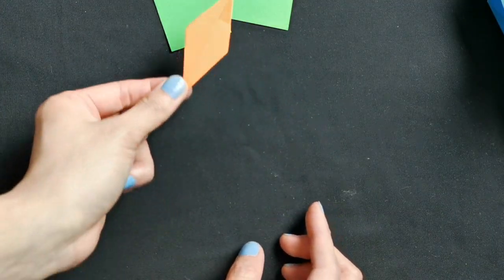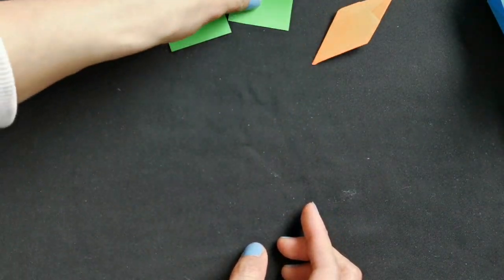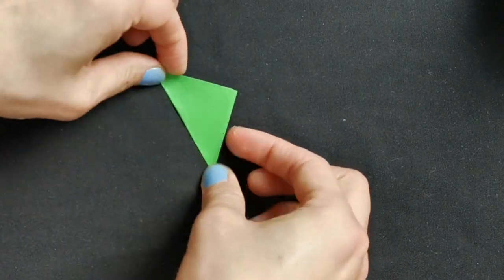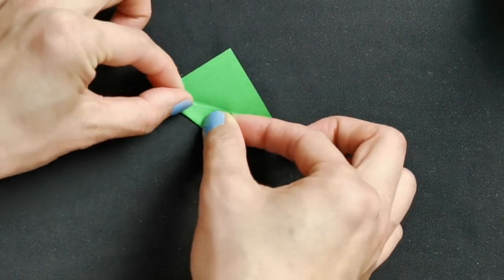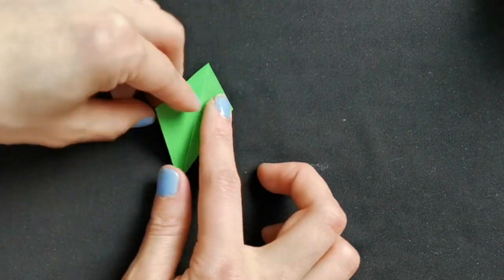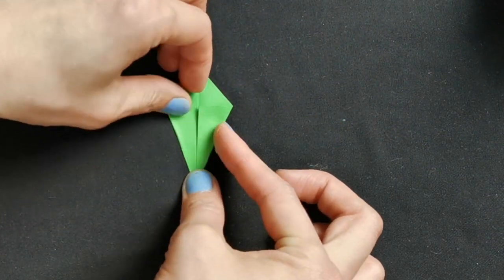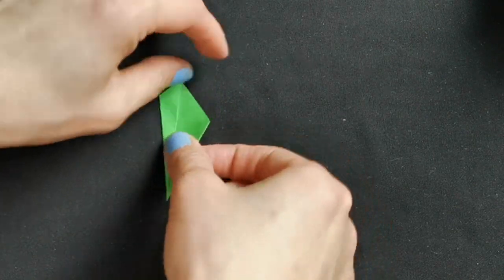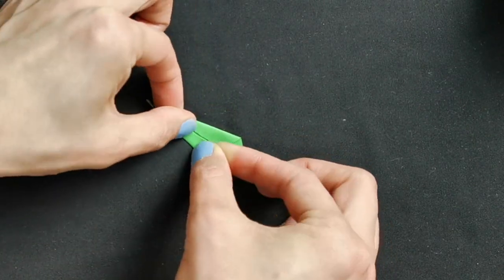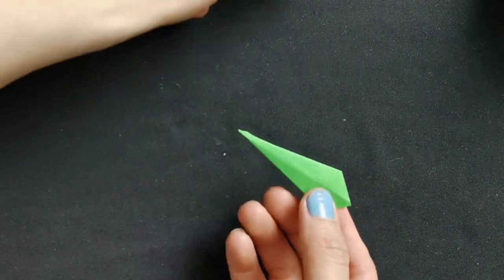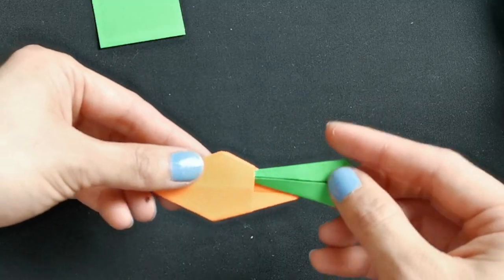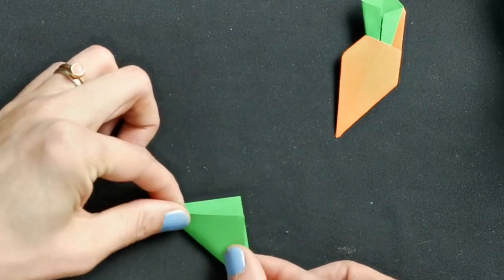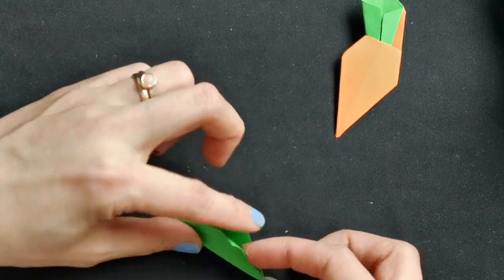And then we fold the top. Turn around, that's the body. And then fold some leaves to triangle, triangle and triangle, and then half again and half again. If you don't really want to bother with two tiny pieces of green you can just cut some stripes.